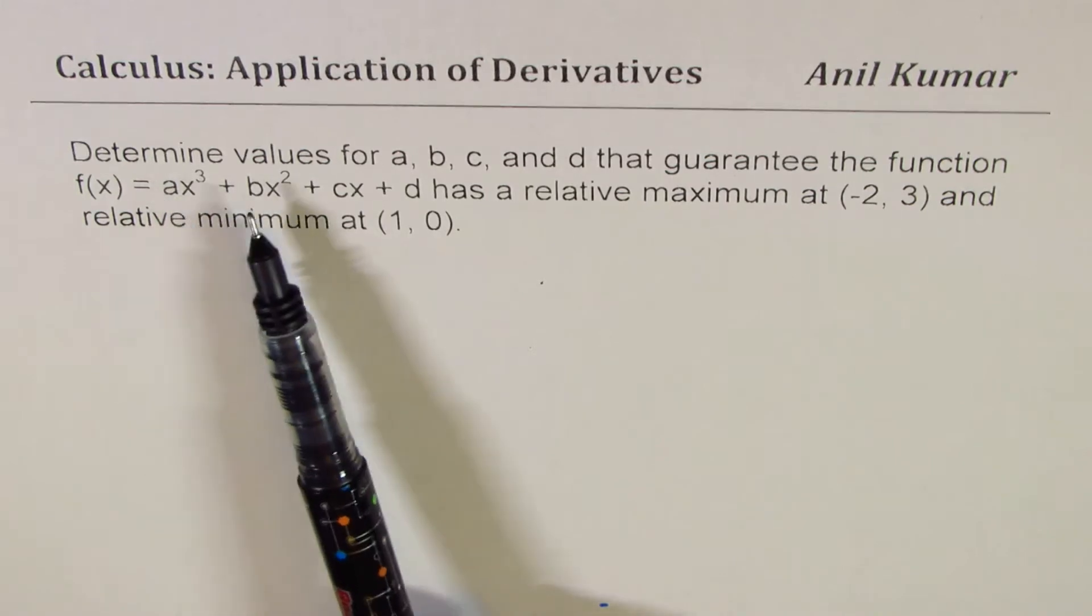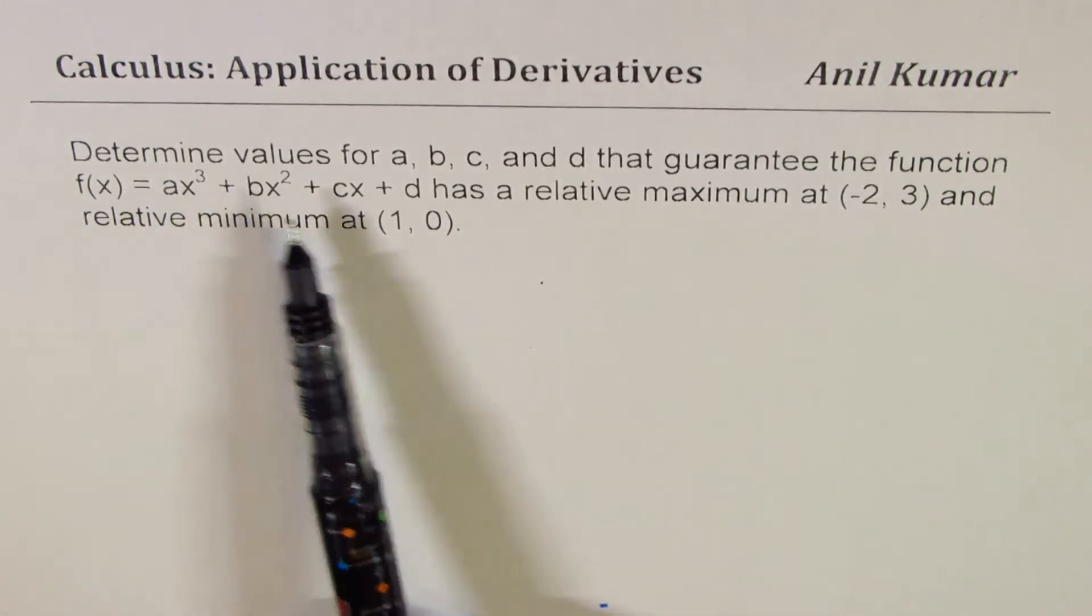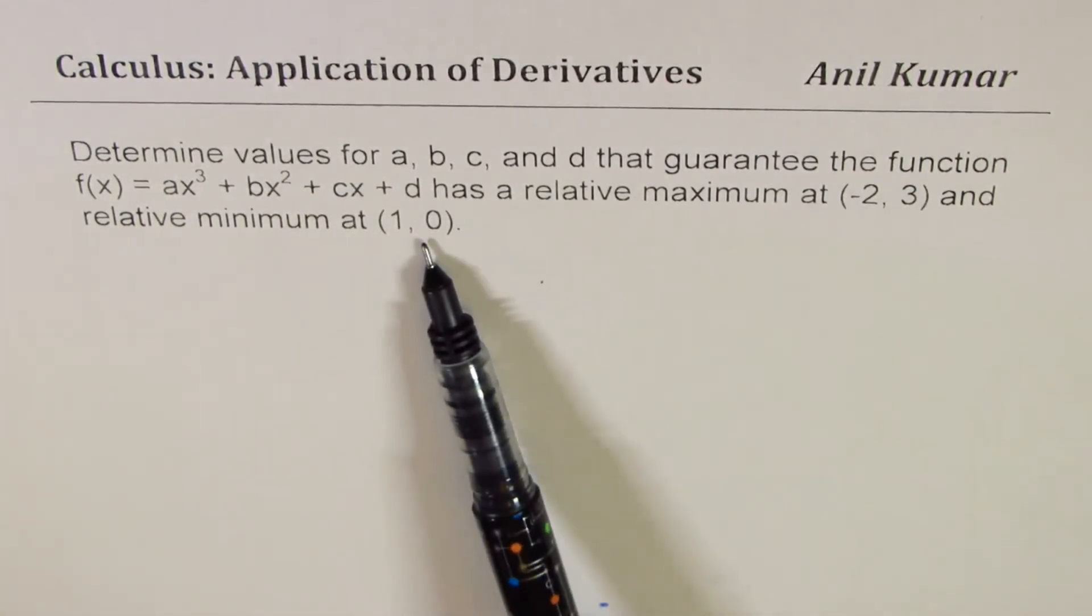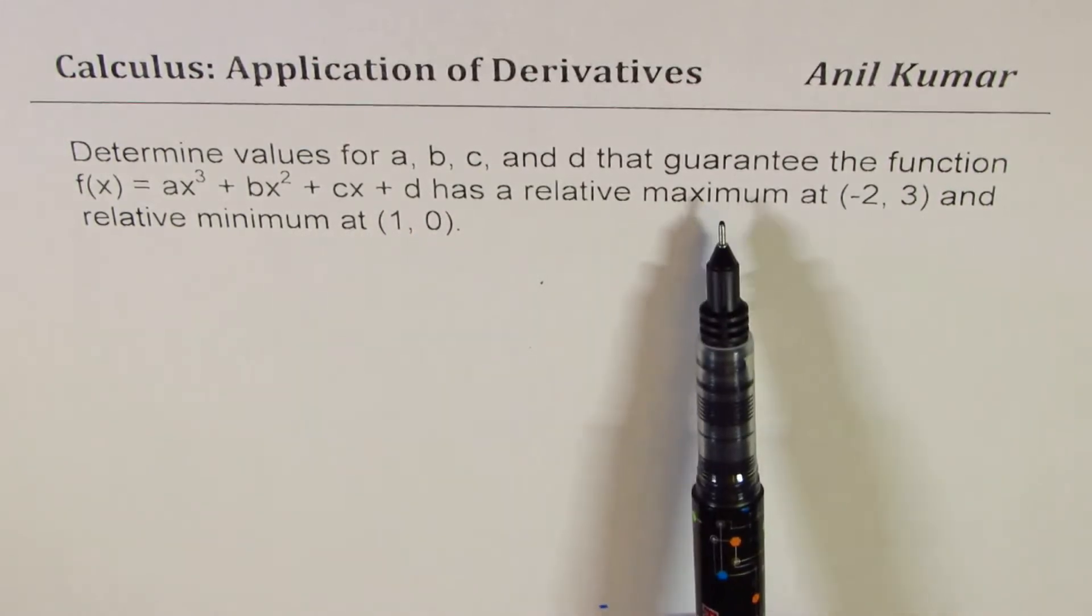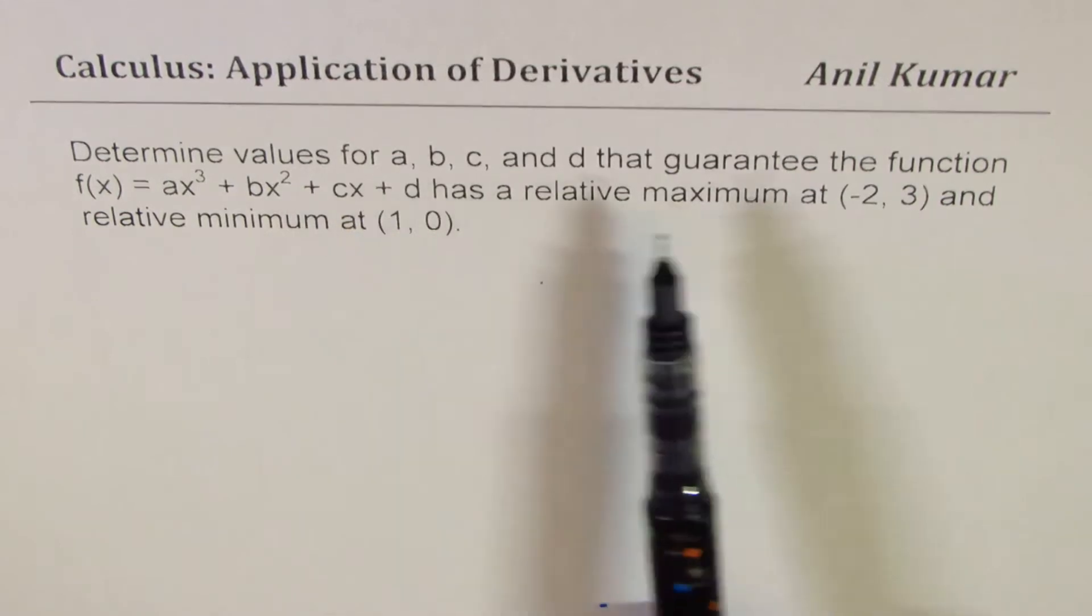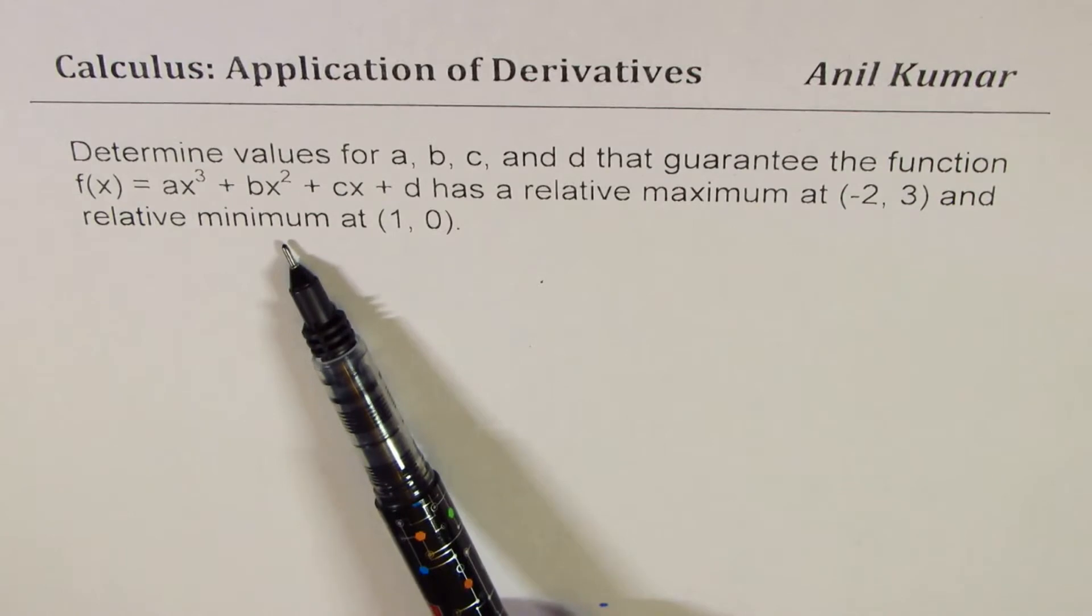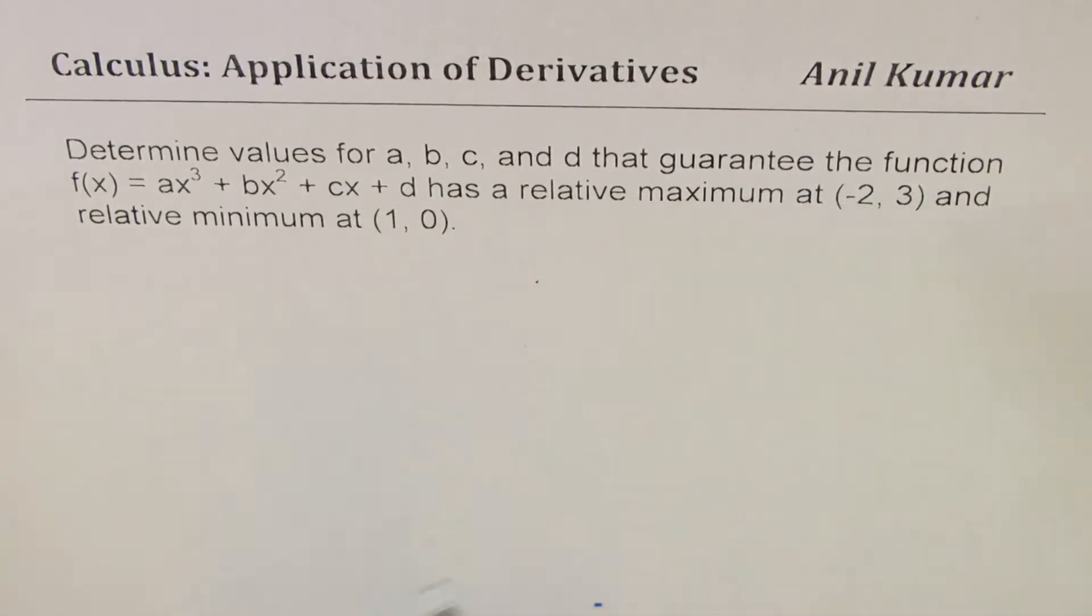Now, we need to find four parameters, four unknowns. We need four equations. Two of them will get directly from the points given, and the other two will get from the first derivative. Since we know at one point we have maximum, at the other we have minimum.